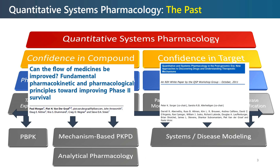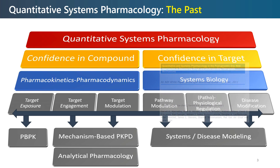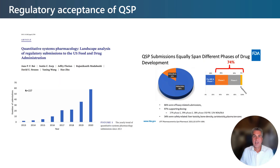Two key publications that helped define the scope and approach of QSP were the so-called three pillar paper from 2012 and the NIH white paper from 2011. The three pillar paper laid out the framework to build confidence in compound-specific pharmacokinetic/pharmacodynamic characteristics and quantitative tools to demonstrate target exposure, engagement, and modulation. The NIH white paper coupled this to approaches from systems biology to build confidence in biological targets, pathways, and mechanisms of action.